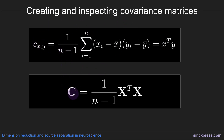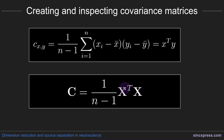We can also use matrix notation to represent the same formula over all possible pairs of X and Y. The covariance matrix C equals the same normalization factor times X transpose times X, where X is a data matrix with mean-centered rows — meaning the average of each signal over time is zero. This formula is either X transpose times X or X times X transpose depending on how the data are stored: if channels are stored by time or time by channels. If the data are time by channels, you flip the first matrix and end up with a channels-by-channels covariance matrix.